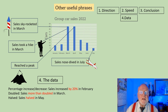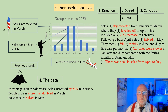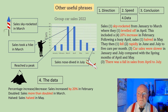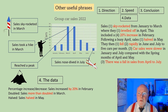Now we have a lot more information to write our report about the graph. We can talk about the direction, the speed, the data, and we can draw a conclusion. So we could write: 'Sales skyrocketed from January to March where they leveled off in April. This included a 20 percent increase in February. Following a busy April, sales halved in May. They then fell rapidly in June and July to five cars per month. Car sales were slower in January and July compared with the spring months of April and May. There was a fall in sales from April to July.'